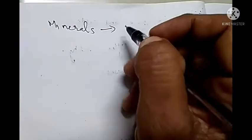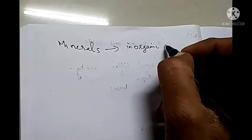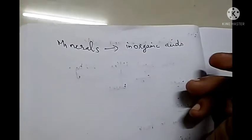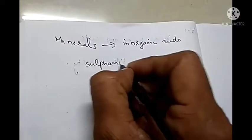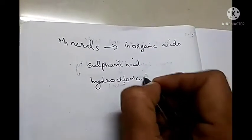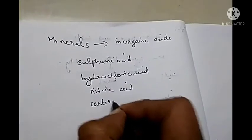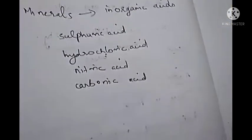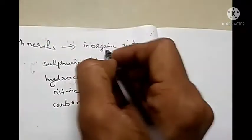There are some other acids which we are obtaining or manufacturing from minerals. Such acids are known as inorganic acids, because they are not related with living organisms. The examples for inorganic acids are sulfuric acid, hydrochloric acid, nitric acid, carbonic acid, etc.